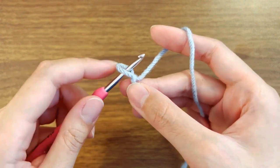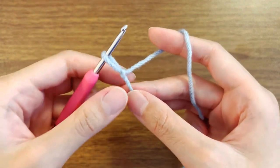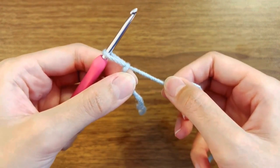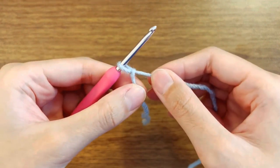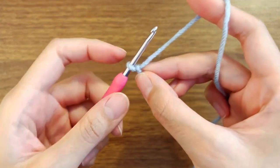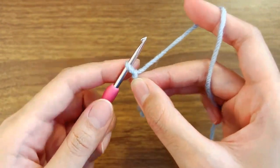The loop is kind of big compared to my hook size, so I'm going to pull back the long end of the yarn to reduce the size of the loop.